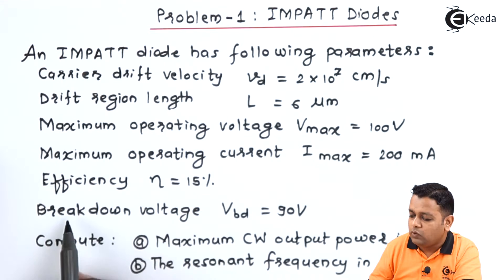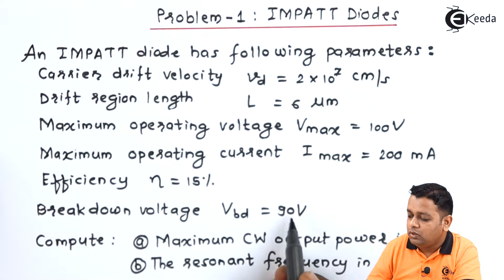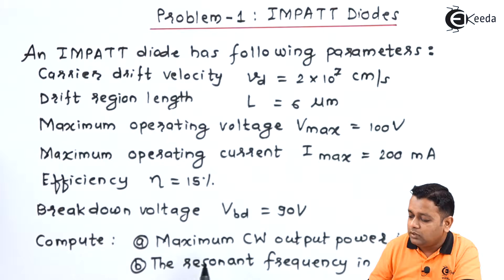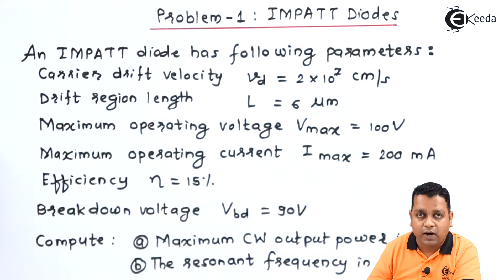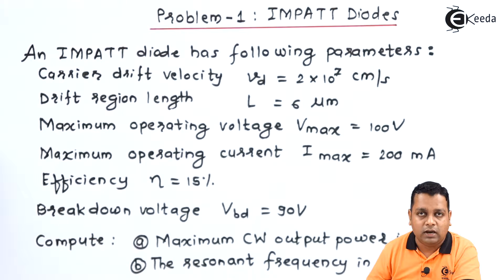The efficiency η = 15%, and the breakdown voltage V_bd = 90 volts. We are asked to compute: (a) the maximum CW output power in watts, and (b) the resonant frequency in gigahertz.